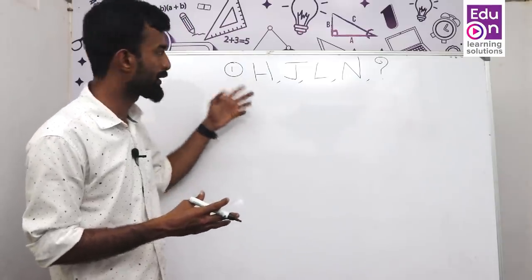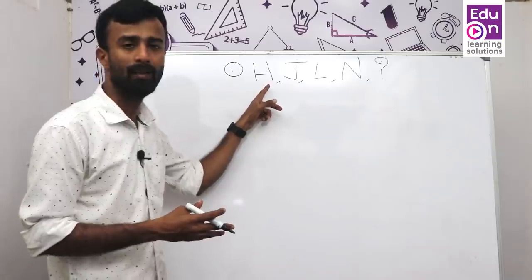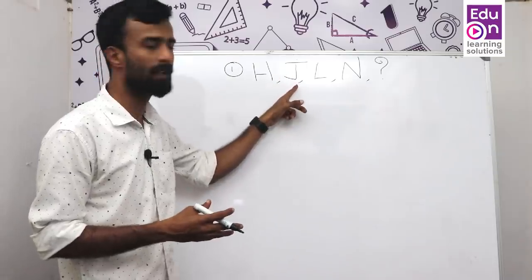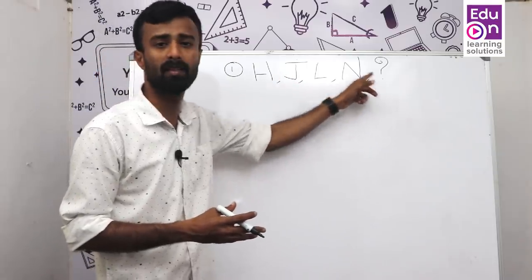Let's look at the first example. The series is: H, J, L, N. What comes next?